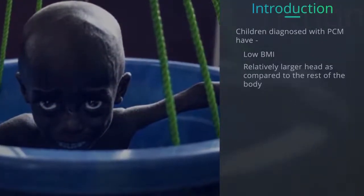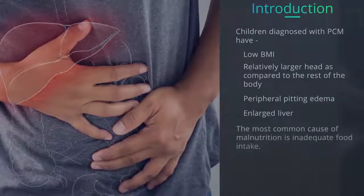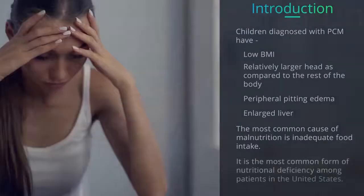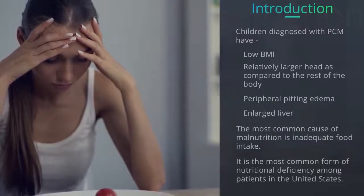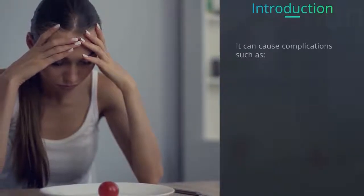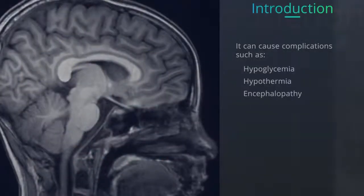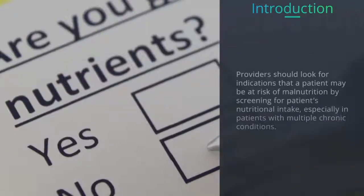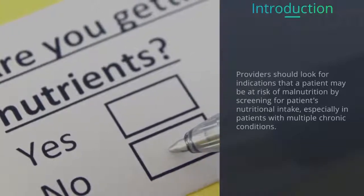Children with PCM also present with peripheral pitting edema and an enlarged liver. Worldwide, the most common cause of malnutrition is inadequate food intake. In the United States, PCM is the most common form of nutritional deficiency among patients, apart from vitamin deficiencies. PCM can cause complications such as hypoglycemia, hypothermia, encephalopathy, diarrhea, heart failure, and infections.